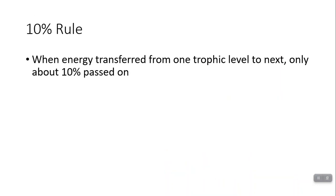But we summarize this as what's called the 10% rule. And that is that only about 10% of energy gets passed on to the next trophic level, which is going to have these major consequences.